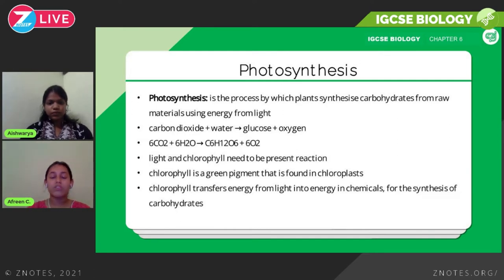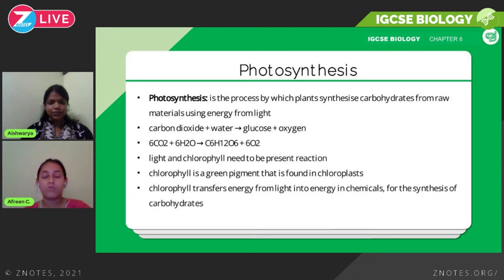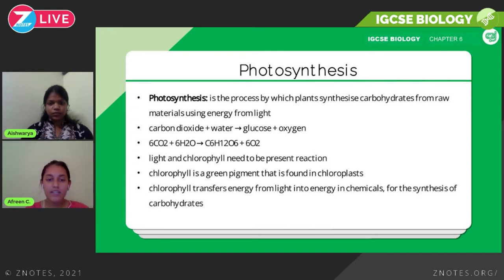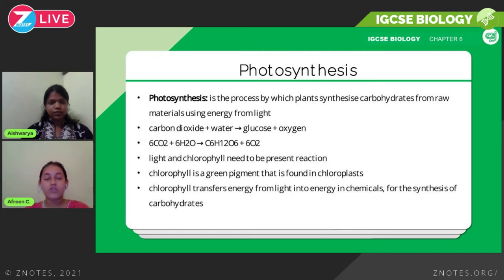The word equation is: carbon dioxide plus water reacts to give glucose and oxygen. The chemical equation is: 6CO₂ + 6H₂O → C₆H₁₂O₆ + 6O₂. The numbers are very important because the equation needs to be balanced — the number of carbons, oxygens, and hydrogens must be the same on both sides. CO₂ is carbon dioxide, H₂O is water, C₆H₁₂O₆ is glucose, and O₂ is oxygen.